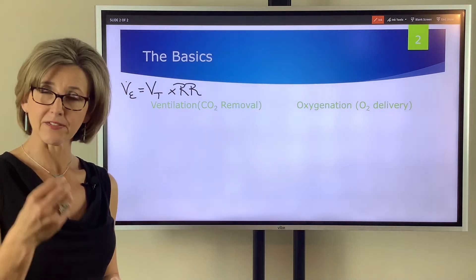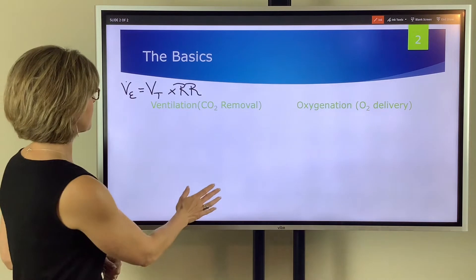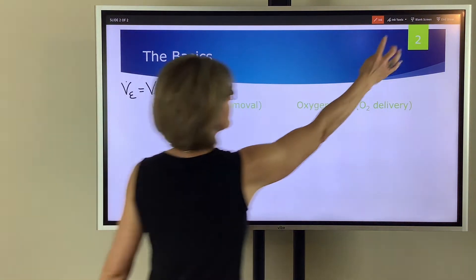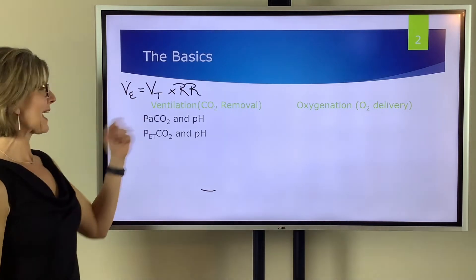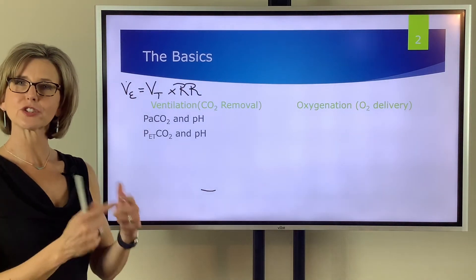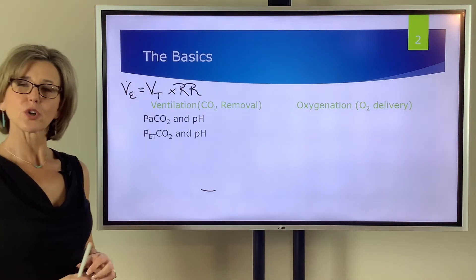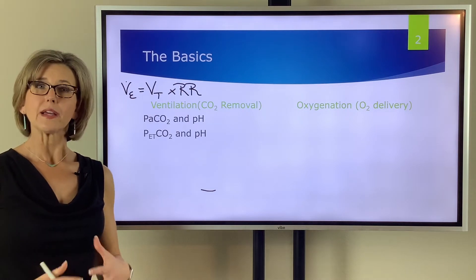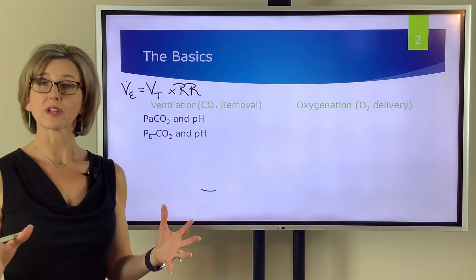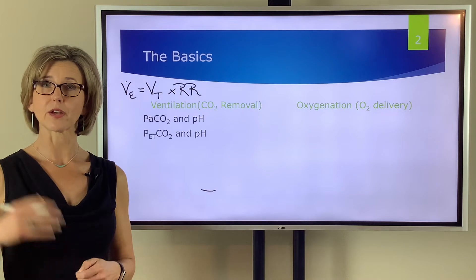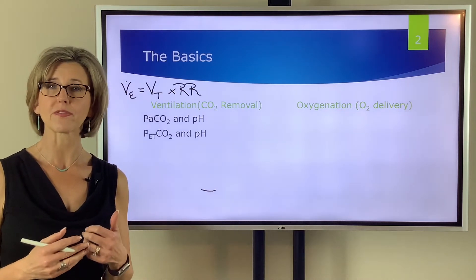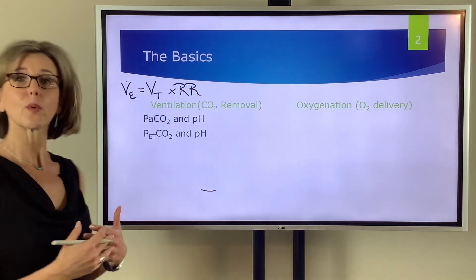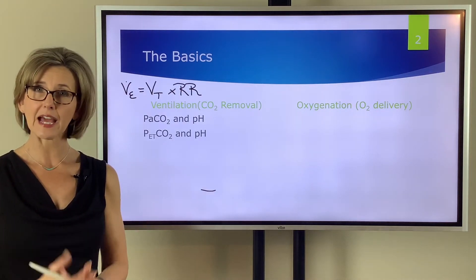And we can assess if that's happening adequately by looking at the PaCO2 on the blood gas in conjunction with the pH. So as long as a CO2 in a person with no underlying lung disease is between 35 and 45 and the pH is between 7.35 and 7.45 we say our patient is ventilating adequately.